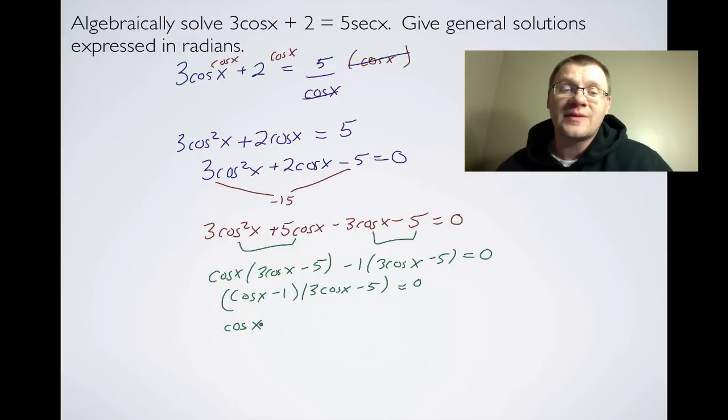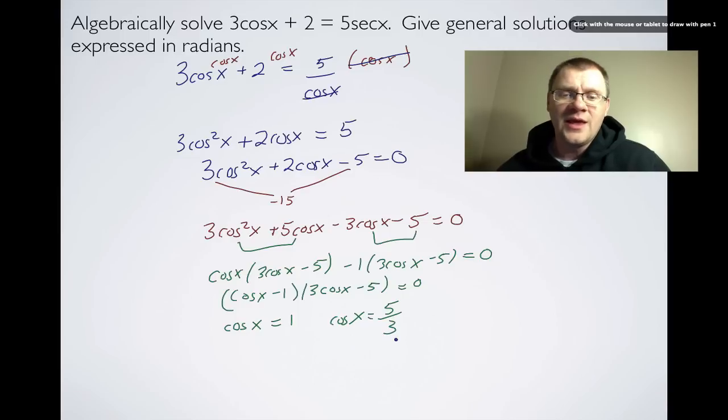So cosx = 1. Well, we've seen that before in the first two examples. And on the second factor, we get cosx = +5/3. And once again, since this number is greater than 1, we know that this can't exist for cosx.